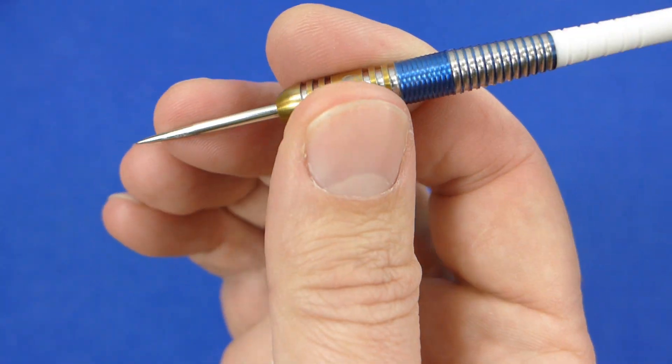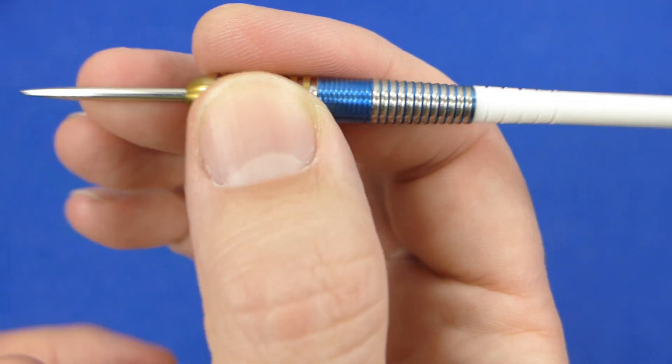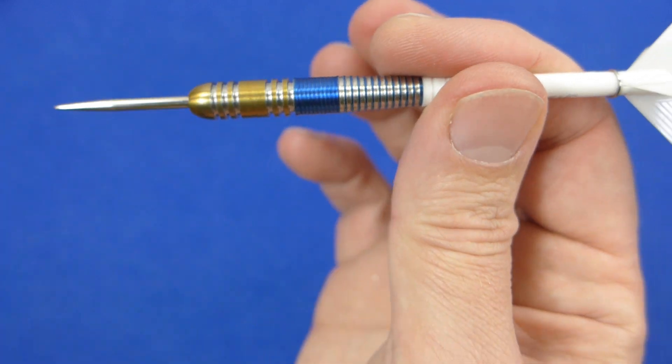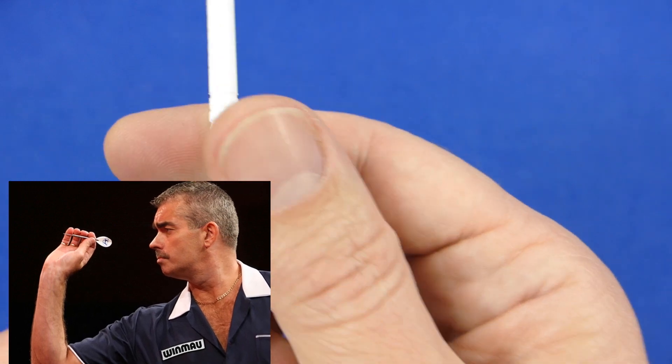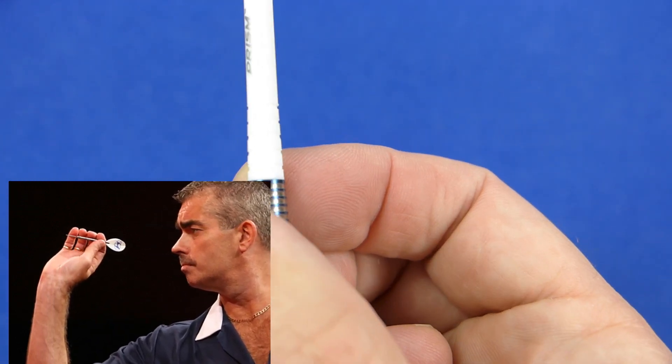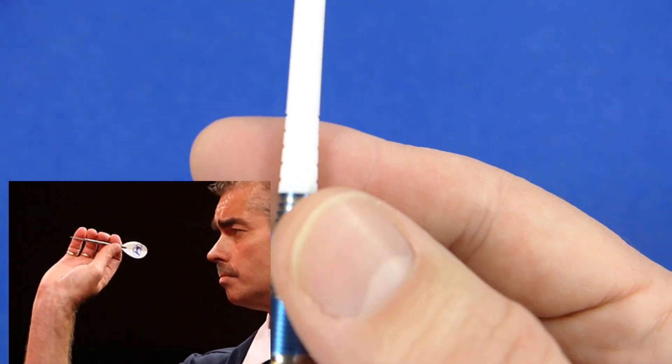But I'm quite happy with the feel of it there for me as a front gripper. I think Steve Beaton actually grips the stem. So I don't know how people throw it from gripping the stem like. But there you go.